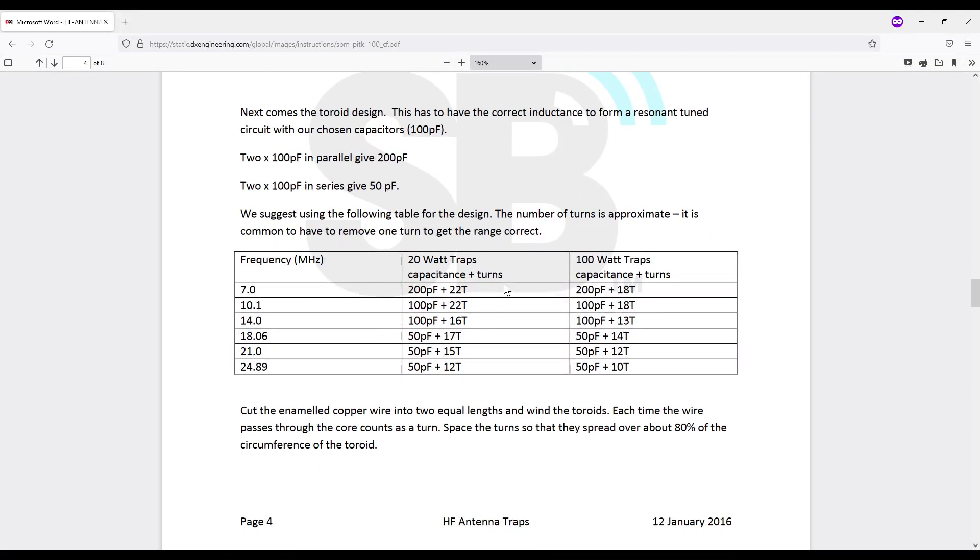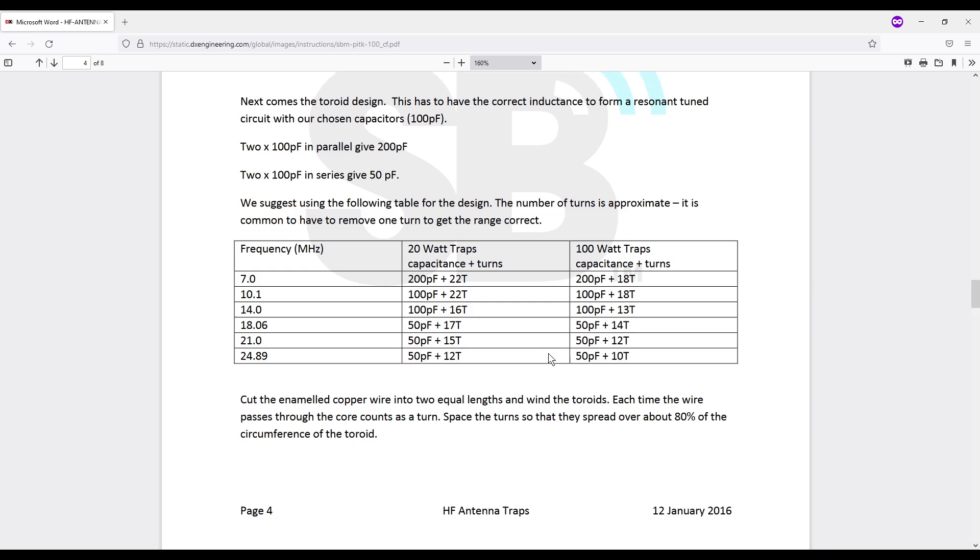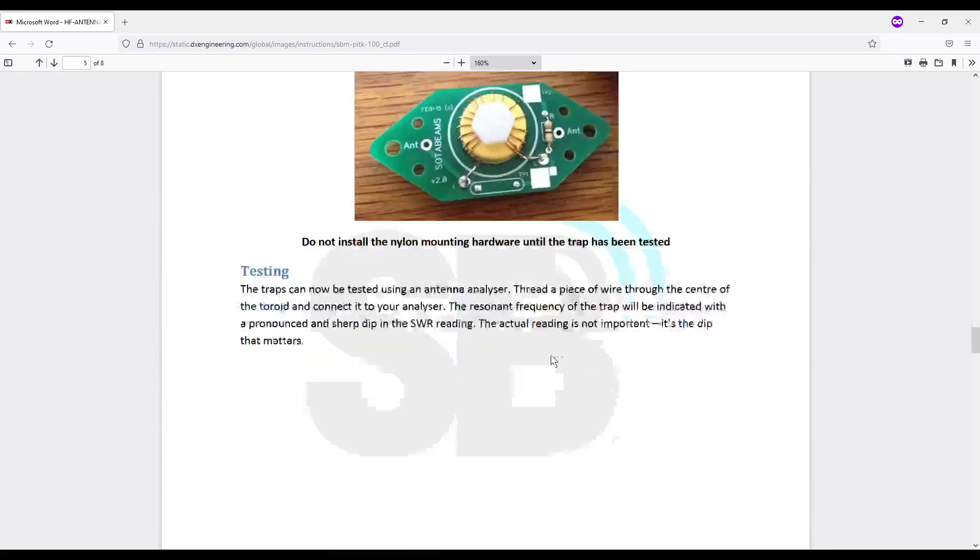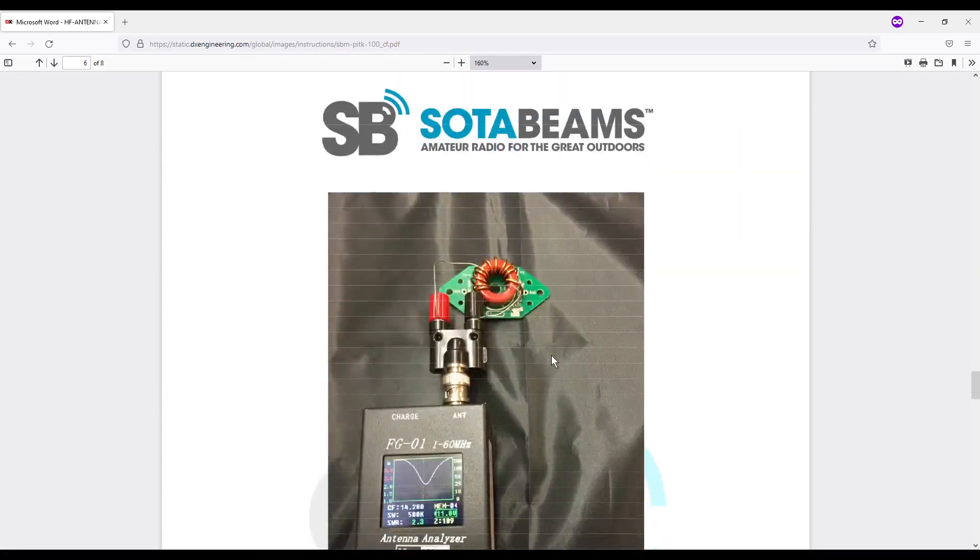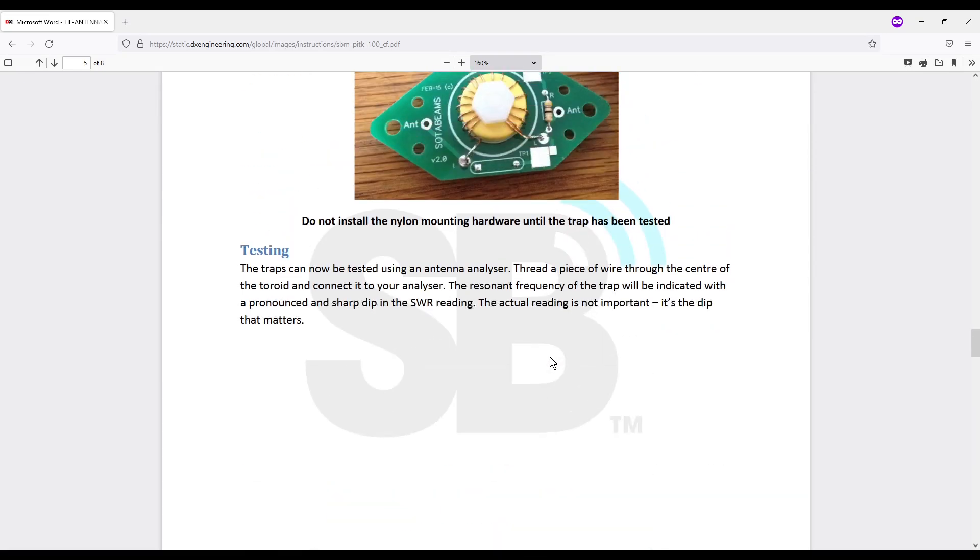Also down here it goes over some of the toroid winding. So if you wanted to make a 20 watt trap or 100 watt trap, you come over here, pick your frequency. For us it was 14 megahertz, and for 20 watt you would use 100 picofarad plus 16 turns, or 13 turns for 100. We went ahead and did that.